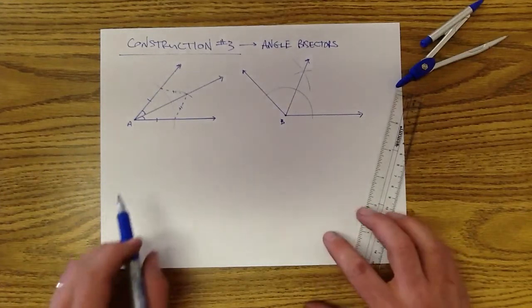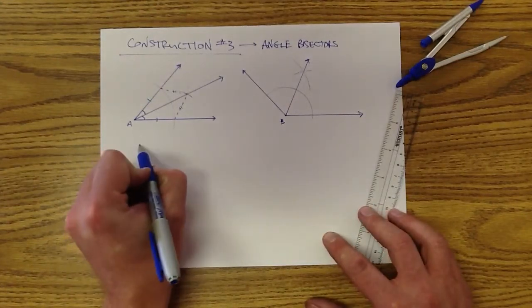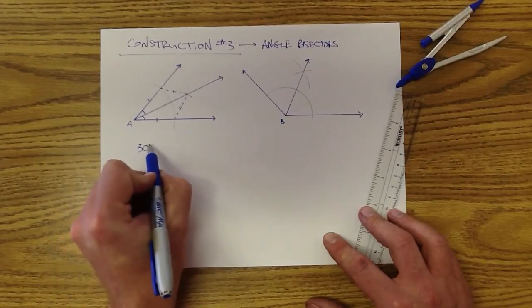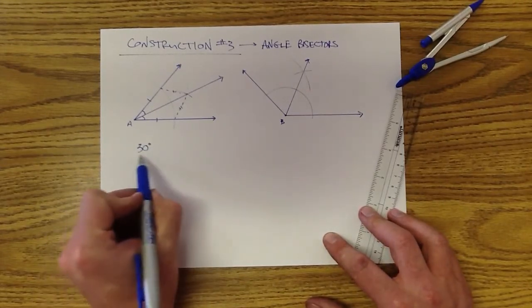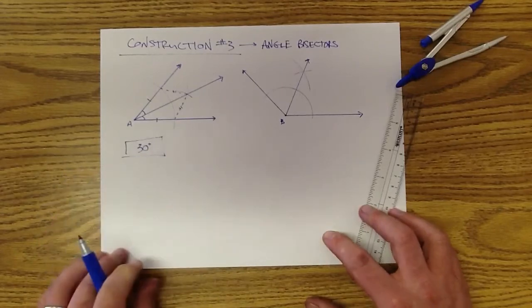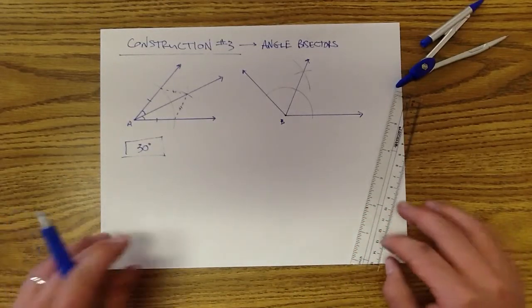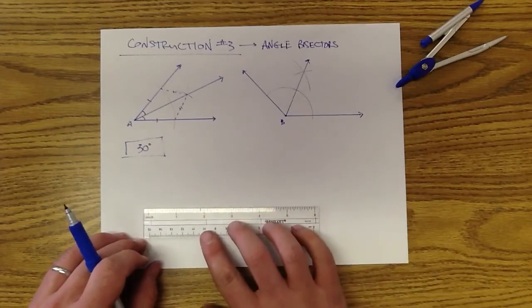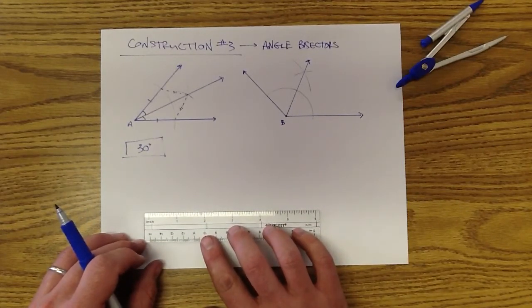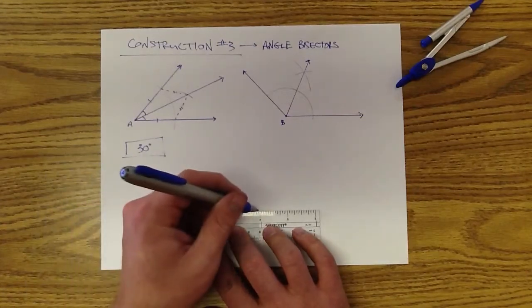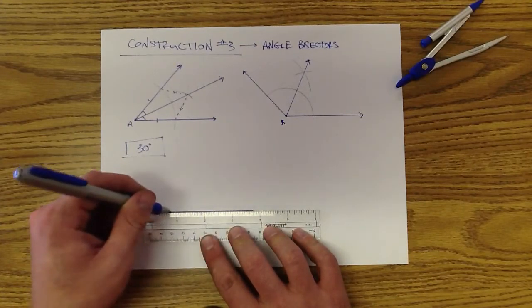Now, the last thing I want you to think about is what if I asked you to create a 30 degree angle. So we want an angle that measures 30 degrees. Now, you may be thinking, how can I do that if I don't have a protractor? Well, really it's not too difficult.